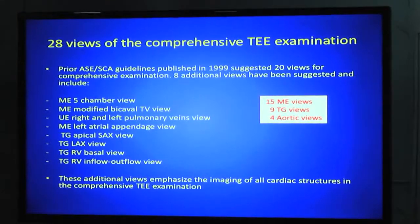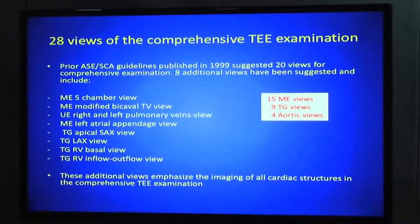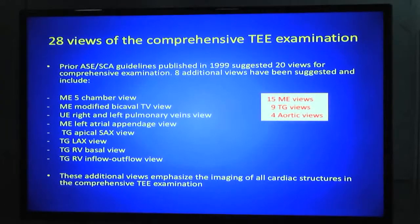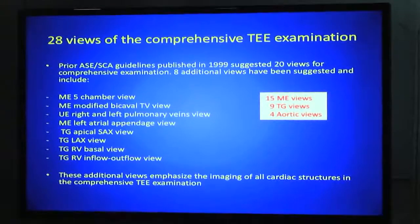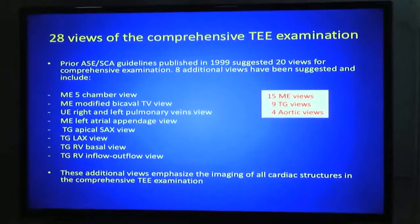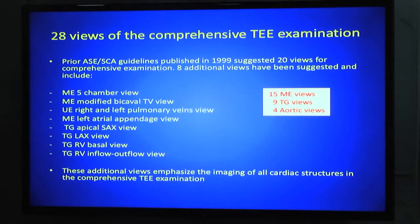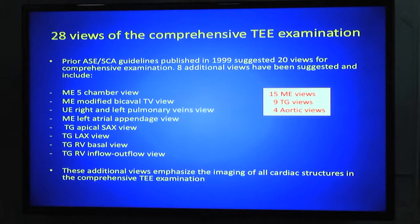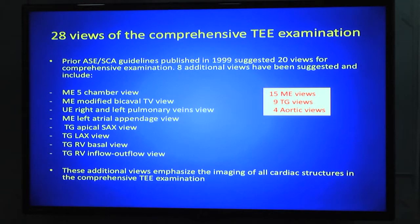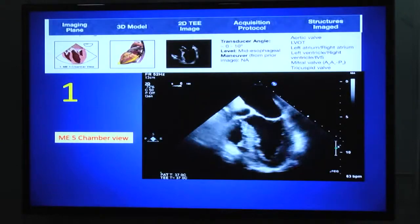Regarding the 28 views of comprehensive TEE examination: the previous 1999 guideline suggested 20 views. Eight additional views have been added, including the mid-esophageal five-chamber view, mid-esophageal modified bicaval tricuspid view, upper esophageal right and left pulmonary venous views, and mid-esophageal left atrial appendage view, plus four transgastric views: transgastric apical short axis, transgastric long axis, and two transgastric RV views. In summary, there are 15 mid-esophageal views, 9 transgastric views, and 4 aortic views — 28 views total.